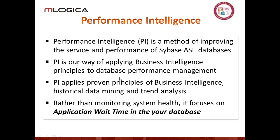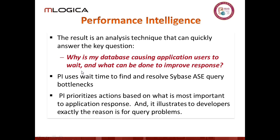I had a customer in Boston who had bought a third-party application. To report on it, it was bringing back 800,000 rows of data and displaying six. You don't have to be a performance expert to know that bringing back 800,000 rows when you need six is not a good thing for your disk, your network, or your CPUs. Figuring out what the application wait time is can be the key to figuring out what your performance issue is.